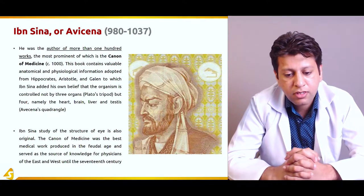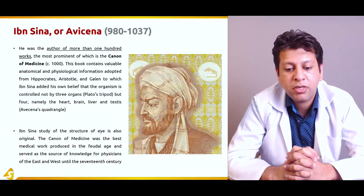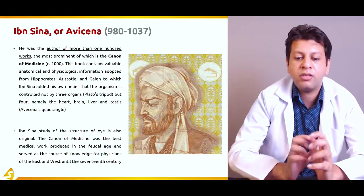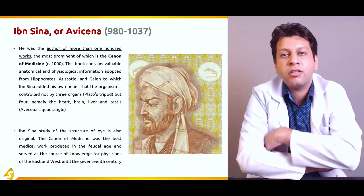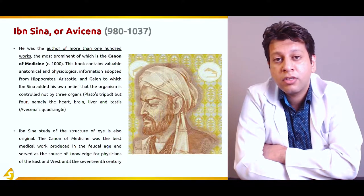Ibn Sina also studied the structure of the eyes. The Canon of Medicine was the best medical work produced in the feudal age and served as a source of knowledge for physicians of both the east and west until the 17th century — meaning it was the main textbook of medicine and anatomy for some seven hundred to eight hundred years.